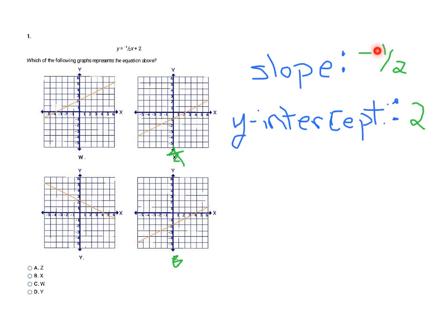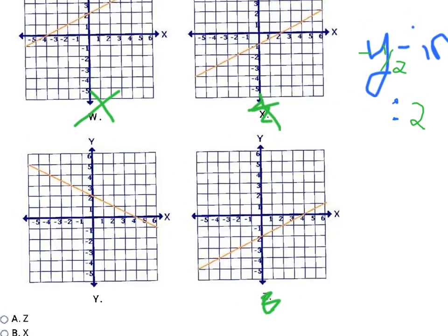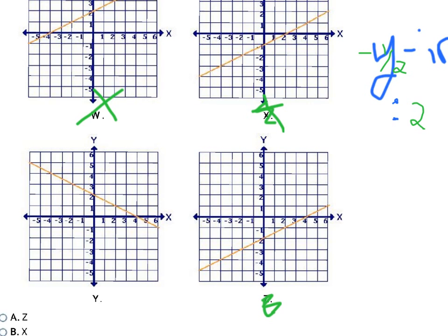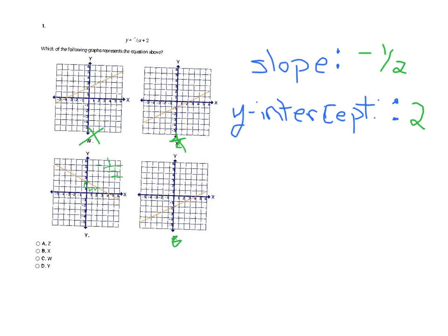Now checking the slope: it's negative one-half, so I need a downhill line. Graph w is going uphill, so it's eliminated. Graph y is going downhill and is my last choice. To double-check, I find two places on the graph where the line crosses the corner of the grid, count the rise over run — down one, run two — giving negative one-half. So the answer is graph y.